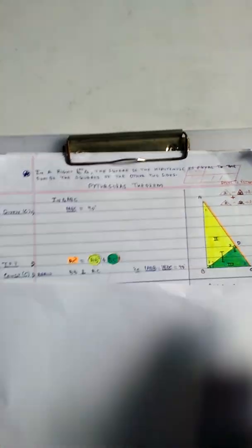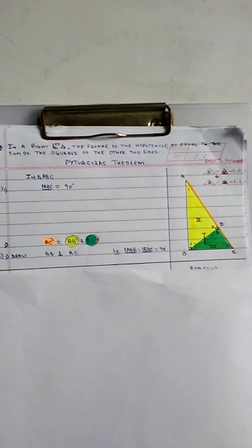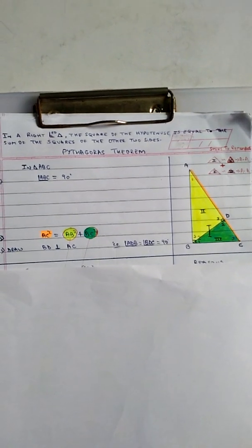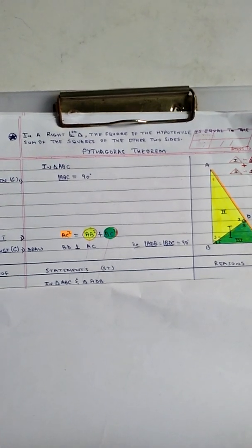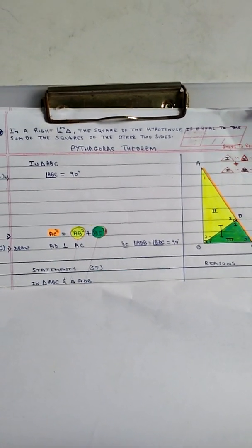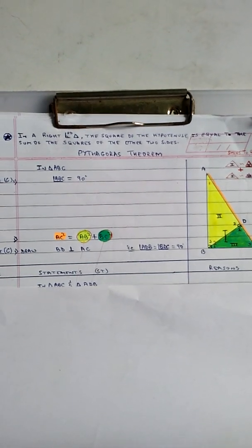Pythagoras theorem states that in a right triangle, the square of the hypotenuse is equal to the sum of the squares of the other two sides. Draw a right-angled triangle ABC with angle B equal to 90 degrees, base BC, and perpendicular height AB.